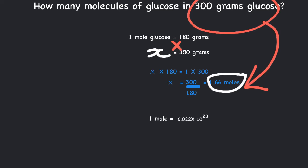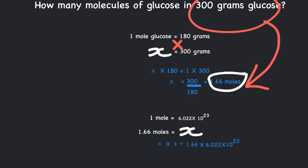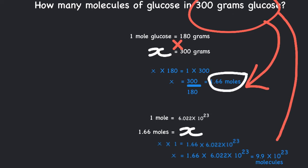Solving for x gives us: x = 1.66 × 6.022×10²³ = 9.9×10²³ molecules. Therefore, a sample of 300 grams of glucose has 9.9×10²³ glucose molecules in it.